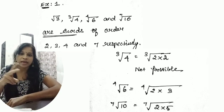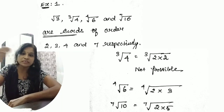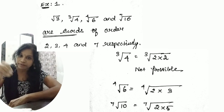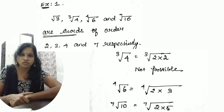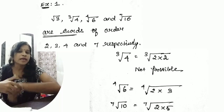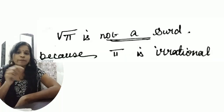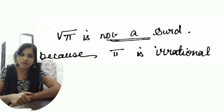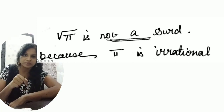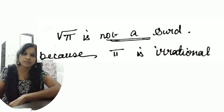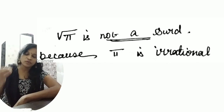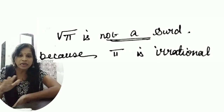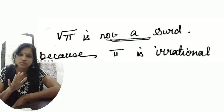When can we say it is not a surd? If the value inside the root — the radicand — is irrational, then we can say it is not a surd. Look at the second example: √π. √π is not a surd because π is already an irrational number. We have already seen that proof. If the radicand is irrational, then the root is definitely not a surd.